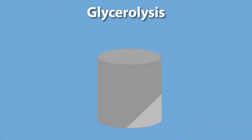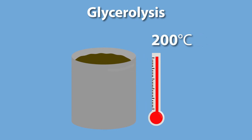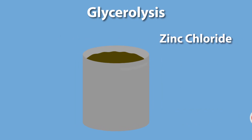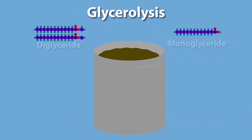Glycerolysis involves adding glycerol to the feedstock and heating it to high temperatures — 200 degrees C — usually with a catalyst such as zinc chloride. The glycerol reacts with the FFAs to form mono and diglycerides.